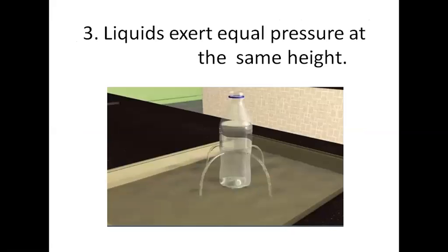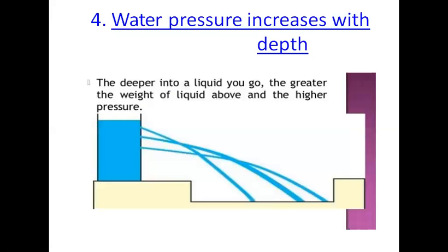In the third case, liquid exerts equal pressure at different points at the same height on the wall. There is a bottle filled with water that has holes punched on its sides. Water coming out from these holes shows that pressure is equal at the same height. However, pressure increases with depth — the deeper into the liquid you go, the greater the weight of the liquid above and the higher the pressure.